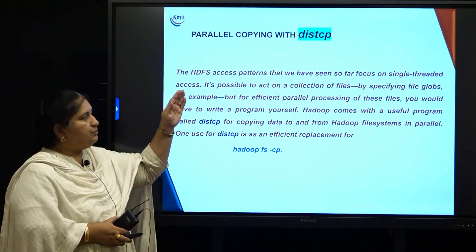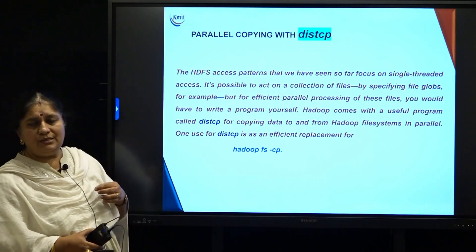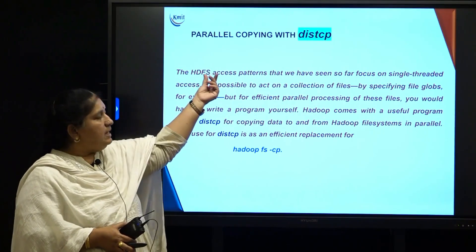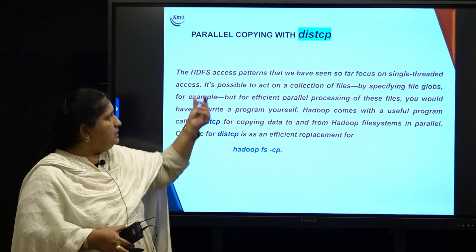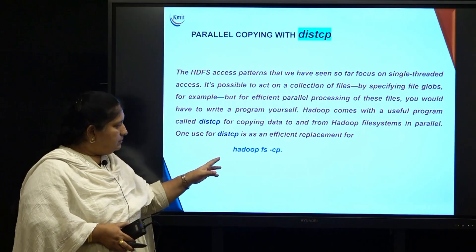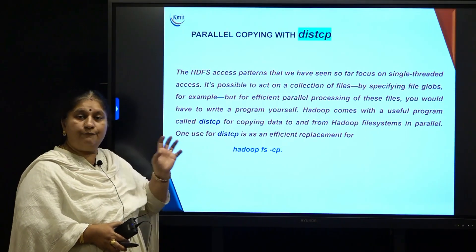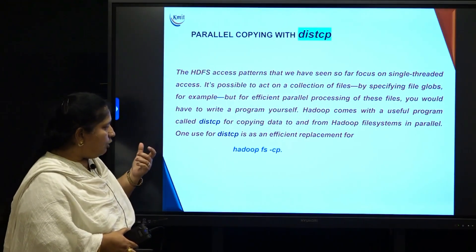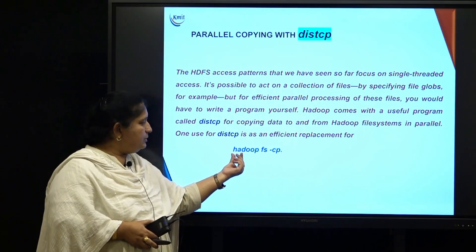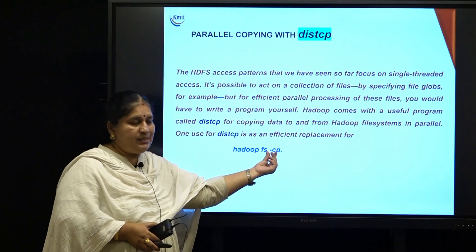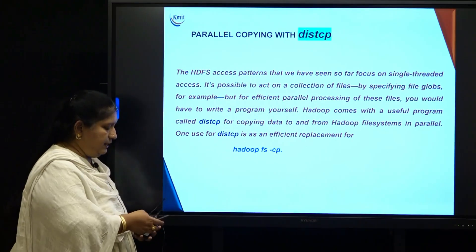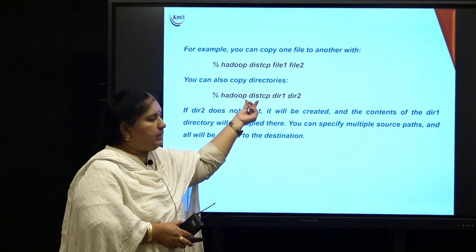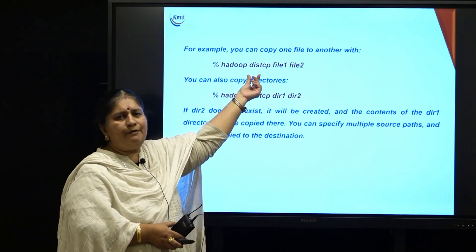Then, parallel copying with distributed CP. Normally when we are working with Linux or Unix flavors, CP is the command for copying file contents into another file. This distcp stands for distributed CP copying. This command will help to copy one file into another file, and also one folder completely into another folder in a single go. Single file copying can happen via Hadoop FS -cp, which is the command for copying one file's contents into another file. But if you want to copy a folder directly into another folder, you can use the distcp command directly.